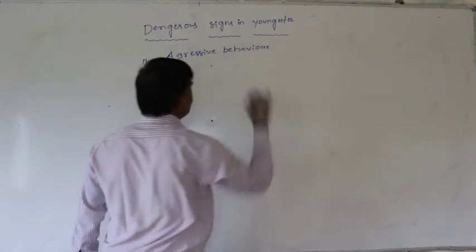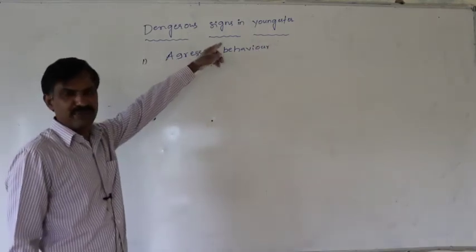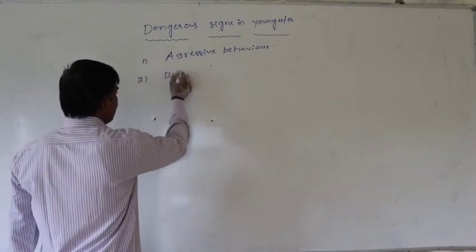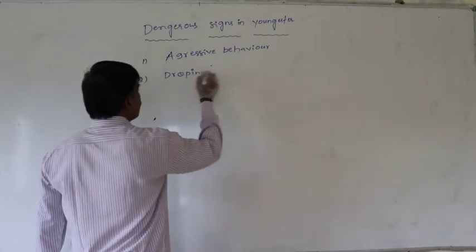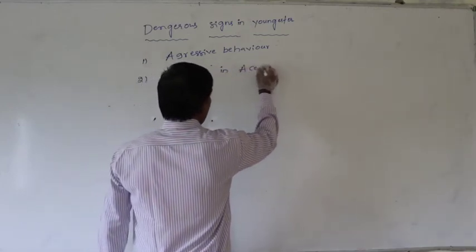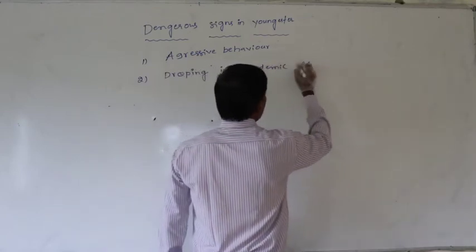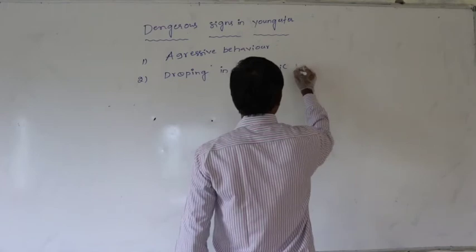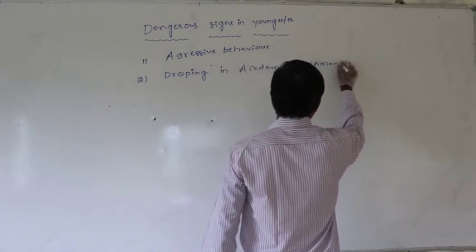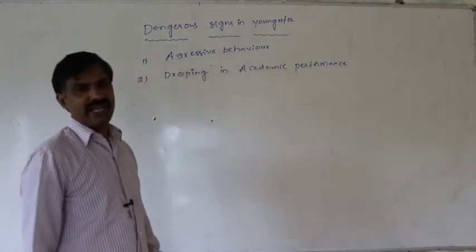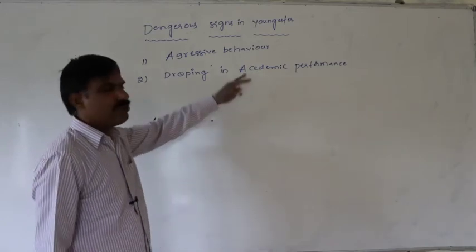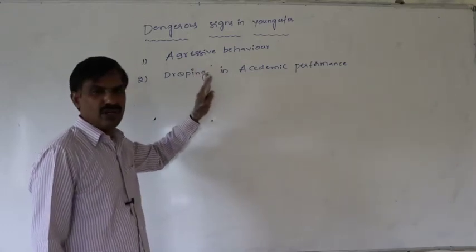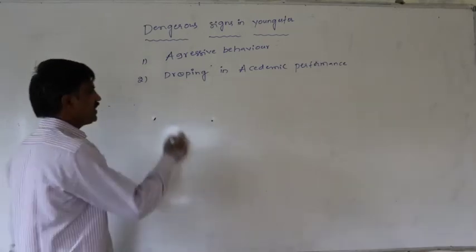Definitely, youngsters who may be attracted towards TDA abuse are more aggressive — they show aggressive behavior. The second symptom is dropping in academic performance. They lose their interest towards their studies and do not show interest in studies, so they drop in academic performance.